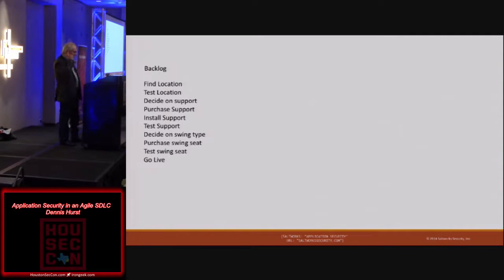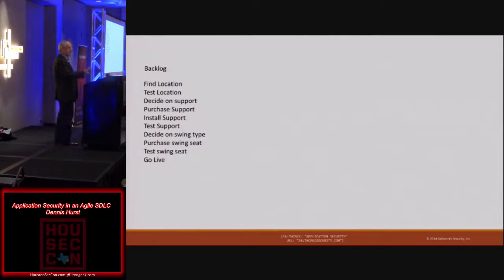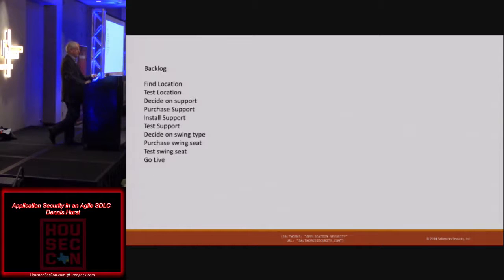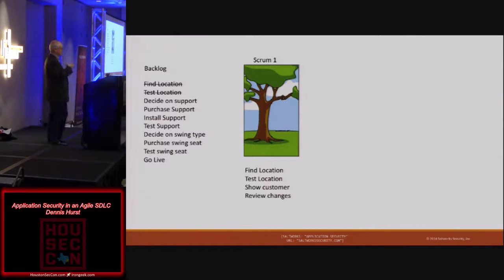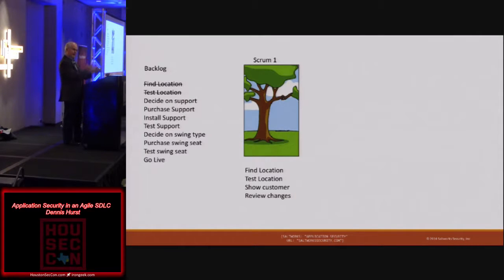Let's talk about how agile actually works in practice. The first term is a backlog — simply a list of stuff we have to do to build what we're building. Security needs to be part of this early conversation. We then take a finite amount of work called a scrum, which typically lasts one to four weeks. The theory is: define something, build it, test it, and be done with it. If it were a website, we build and test five pages and that's a finished piece of work.